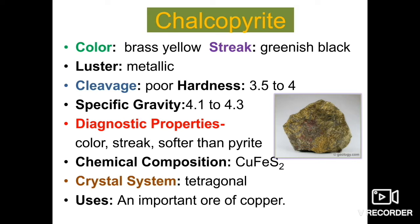Next is chalcopyrite. Its color is very important — brass yellow. The streak is greenish black. As you can see, the color of chalcopyrite is brass yellow, and when it is rubbed, decomposed, or broken, the powder produced is the streak, which is greenish black. Luster is metallic. Cleavage is not well developed — it is poor. Hardness is 3.5 to 4. Specific gravity is 4.1 to 4.3. The diagnostic properties for identification are the color and the streak.